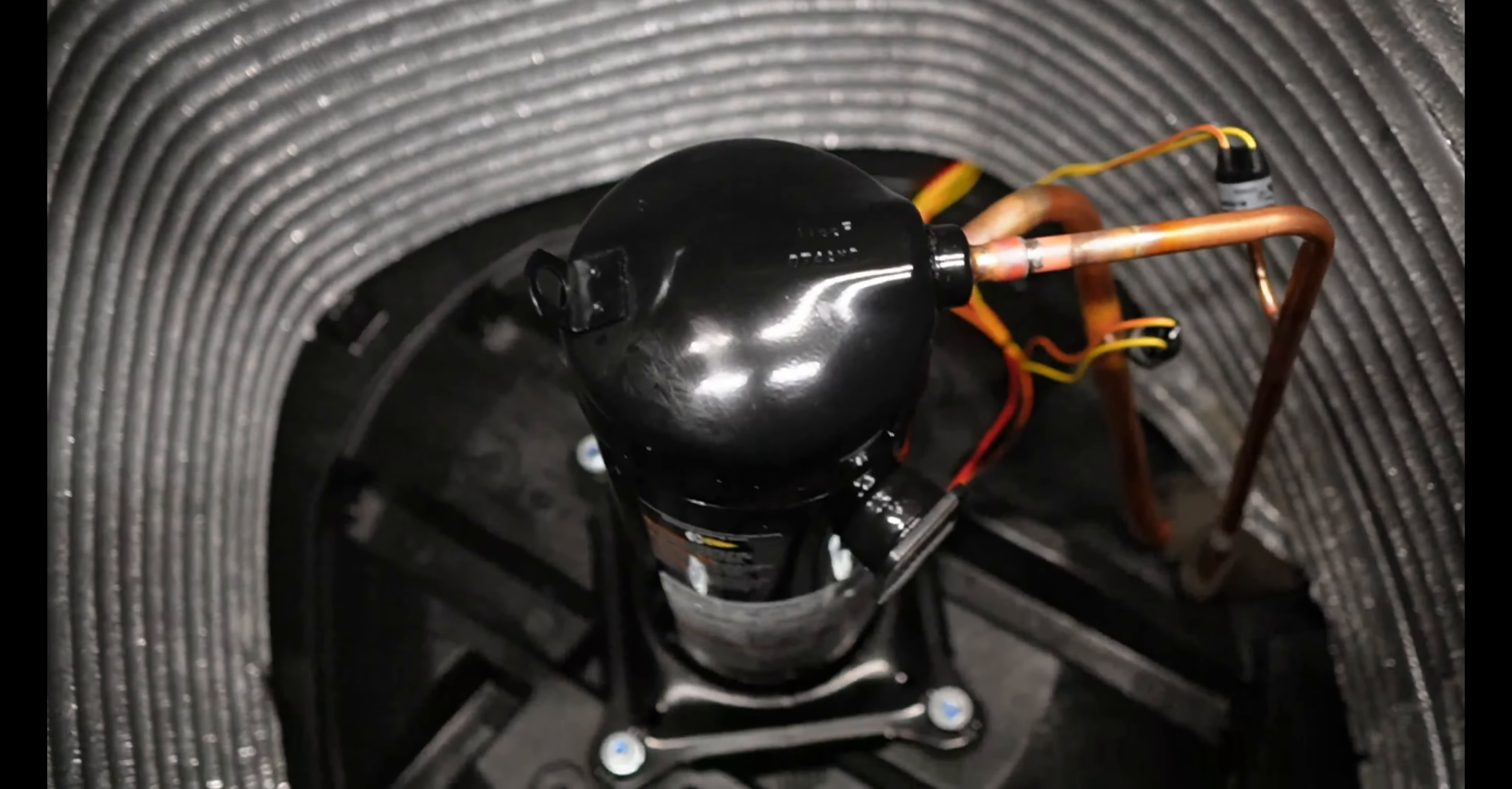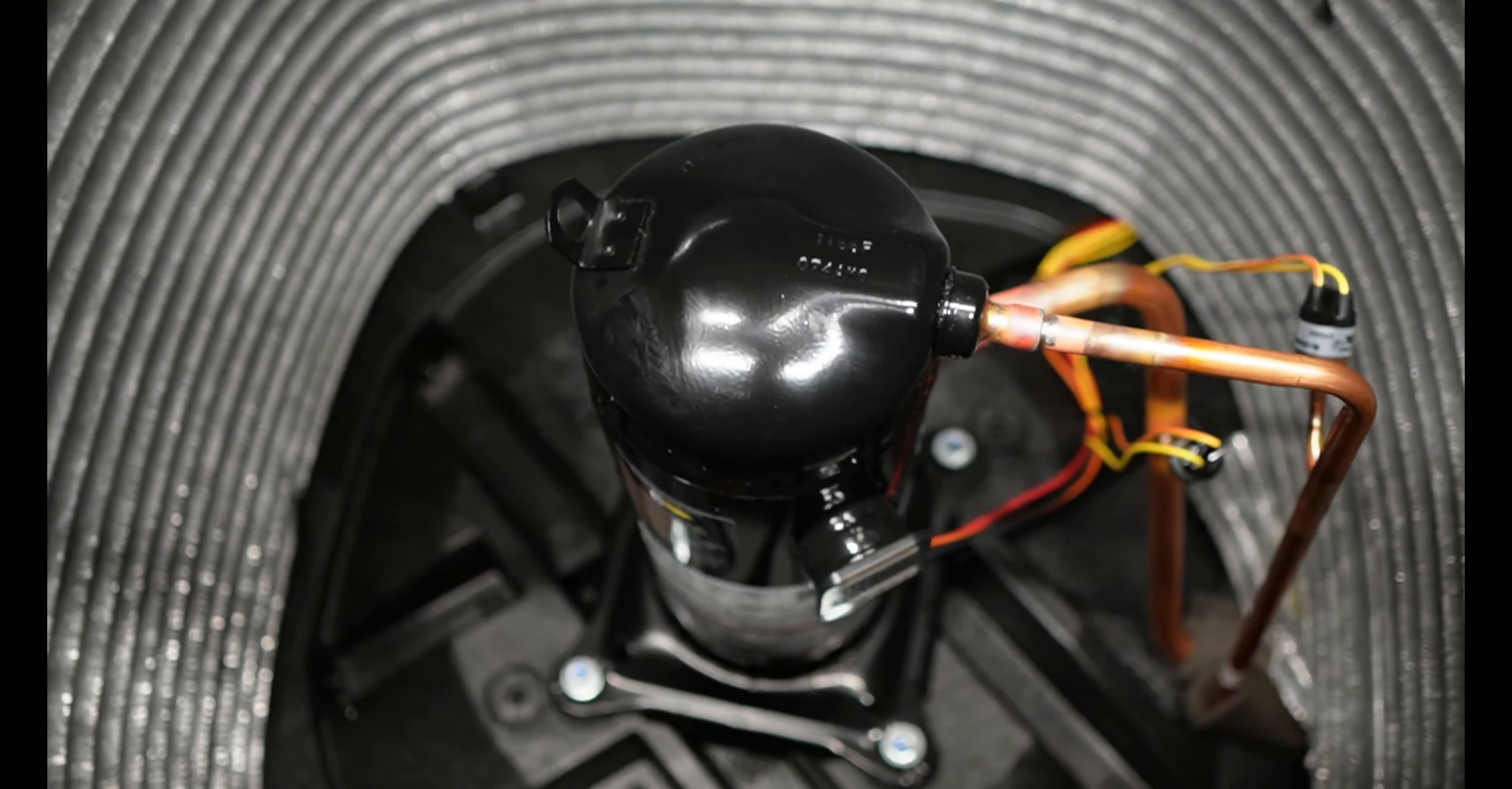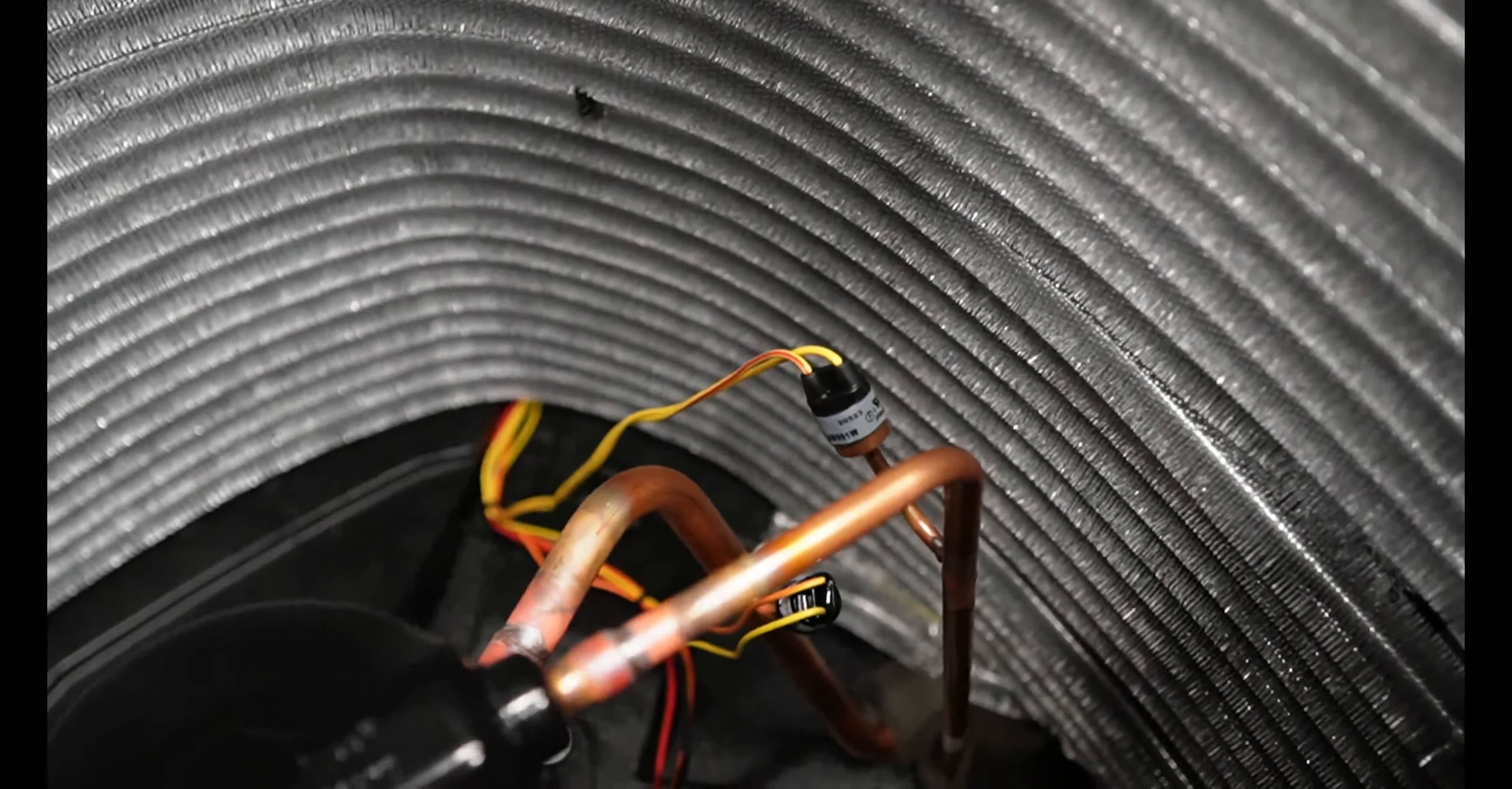The compressor is an Alliance compressor. Alliance is made by Copeland specifically for Trane. They're very picky about that, so you always see the Alliance compressors in Trane. Why am I not surprised? Again.